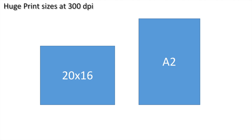Looking at some huge print sizes at 300 DPI: a twenty by sixteen would require twenty seven point five megapixels, and an A2 would require thirty three point one megapixels. Those really are quite big.